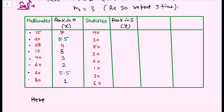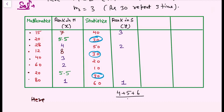For Statistics ranking: 60 is highest so gets rank 1, 50 gets rank 2, 40 gets rank 3. Since 30 repeats 3 times and would get ranks 4, 5, and 6, we average them: (4+5+6)/3 = 15/3 = 5. So all three 30s get rank 5. Then 20 gets rank 7 and 10 gets rank 8. When a value repeats, we assign the average rank.